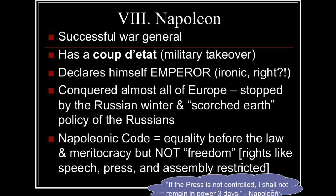Napoleon has two goals: he wants to control all of Europe and reassert French power in the Americas. He accomplishes one of these goals. After the Haitian Revolution, Napoleon cuts his losses in the Americas and instead focuses on Europe, where he is really successful. By the time his empire falls in 1815, he's created the largest empire since the Romans. His empire stretches from Spain all the way into Russia, controlling basically everything except Portugal and Great Britain. However, it expands so fast that it becomes unstable.